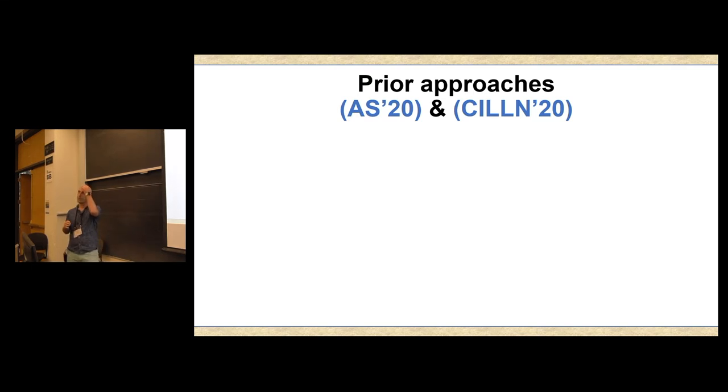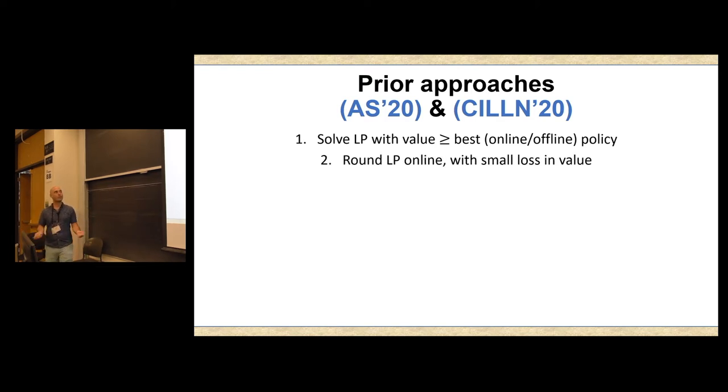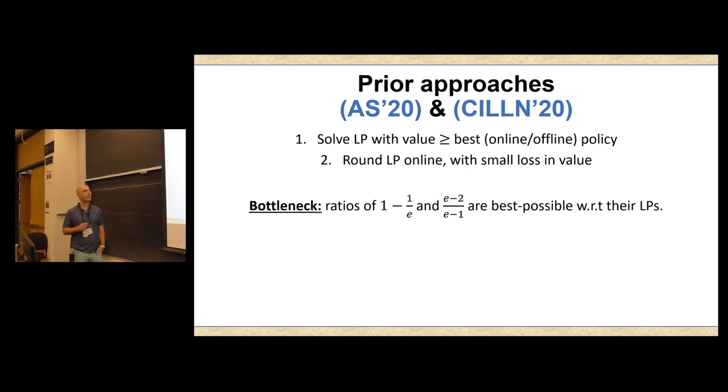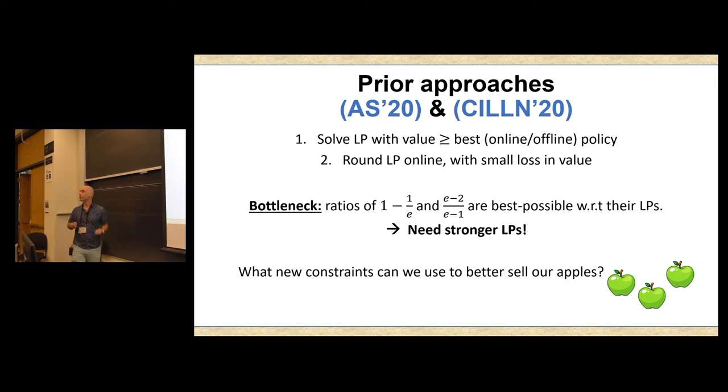So before I tell you about our approach, let me revisit the approaches of Awad and Saritac and Colina et al. Basically, what they do is follow the well-trodden path of approximation algorithms: relax and round. Step number one, write some linear program that upper bounds the best value you could get. Step number two, round this LP in an online setting while incurring a small loss in your approximation guarantee. Unfortunately, if we want to improve on their results, there's some bottleneck we face. In particular, the linear programs that they design, the best any online algorithm could do versus these LPs, even in fairly simple instances, is exactly 1-1 over e and exactly 1-1 over e-1. So if we want to beat these bounds, we need some new ideas. In particular, we need stronger LPs. Can we come up with new constraints that upper bound any policy and help us sell these apples more efficiently, or at least provably more efficiently?